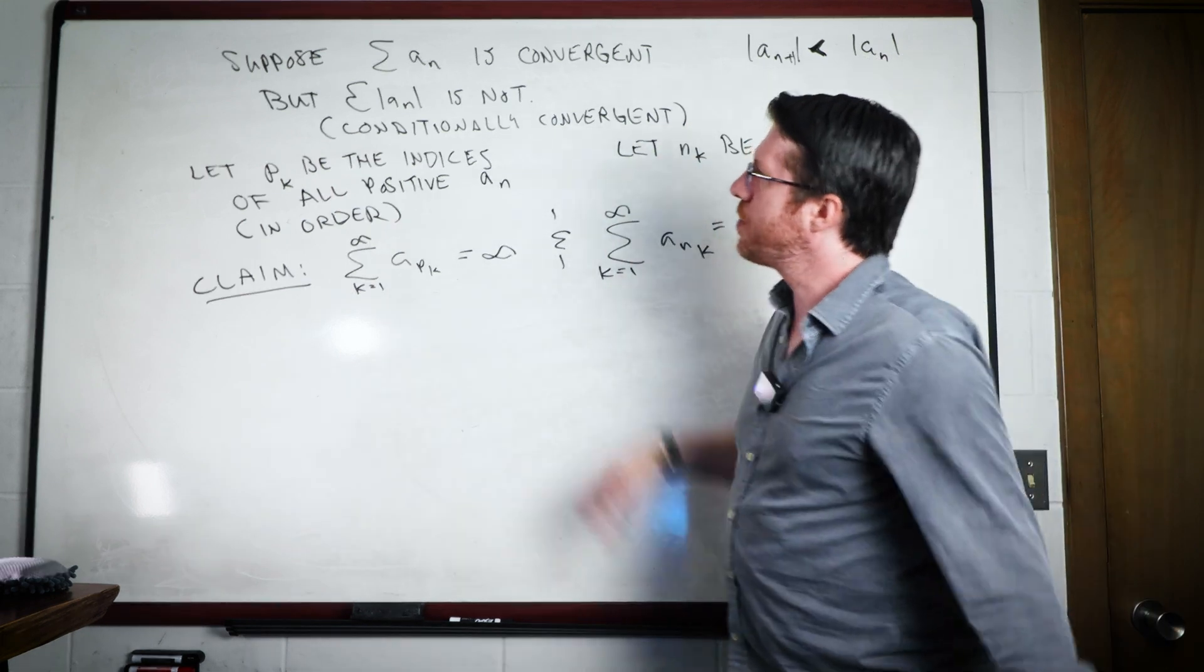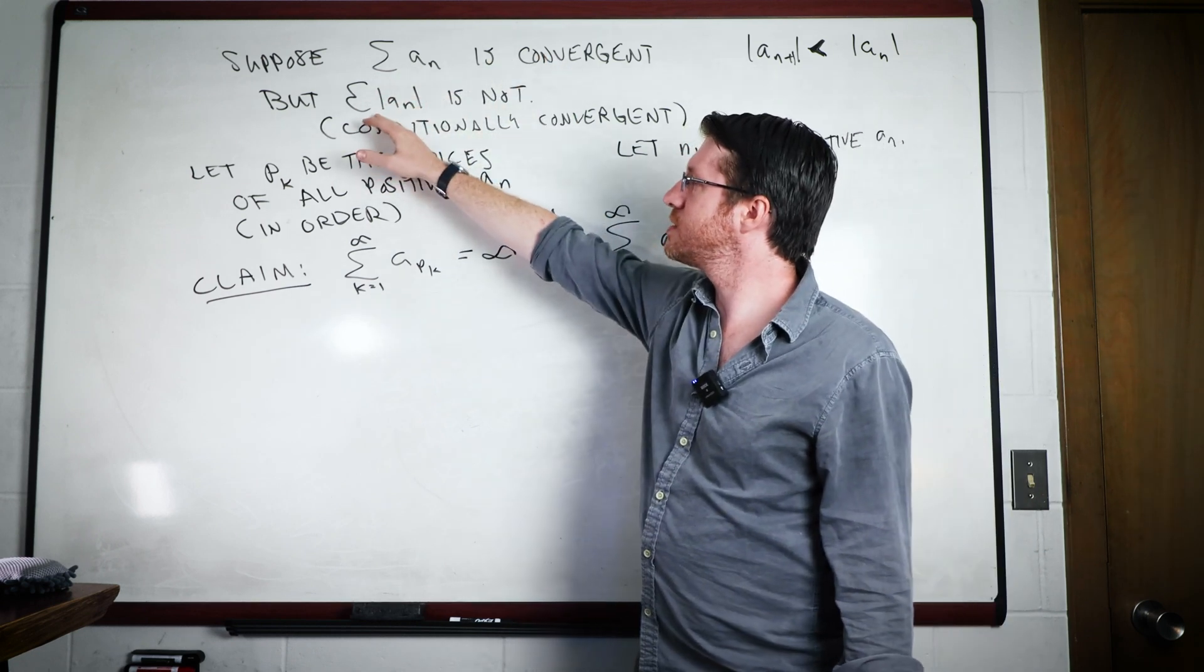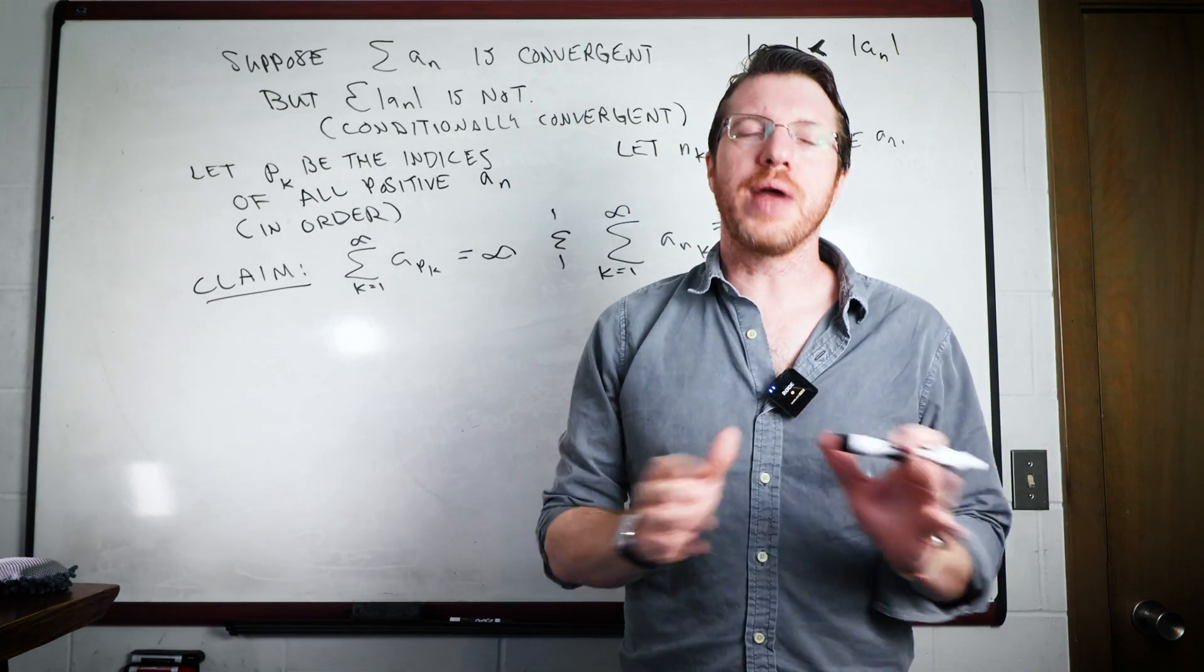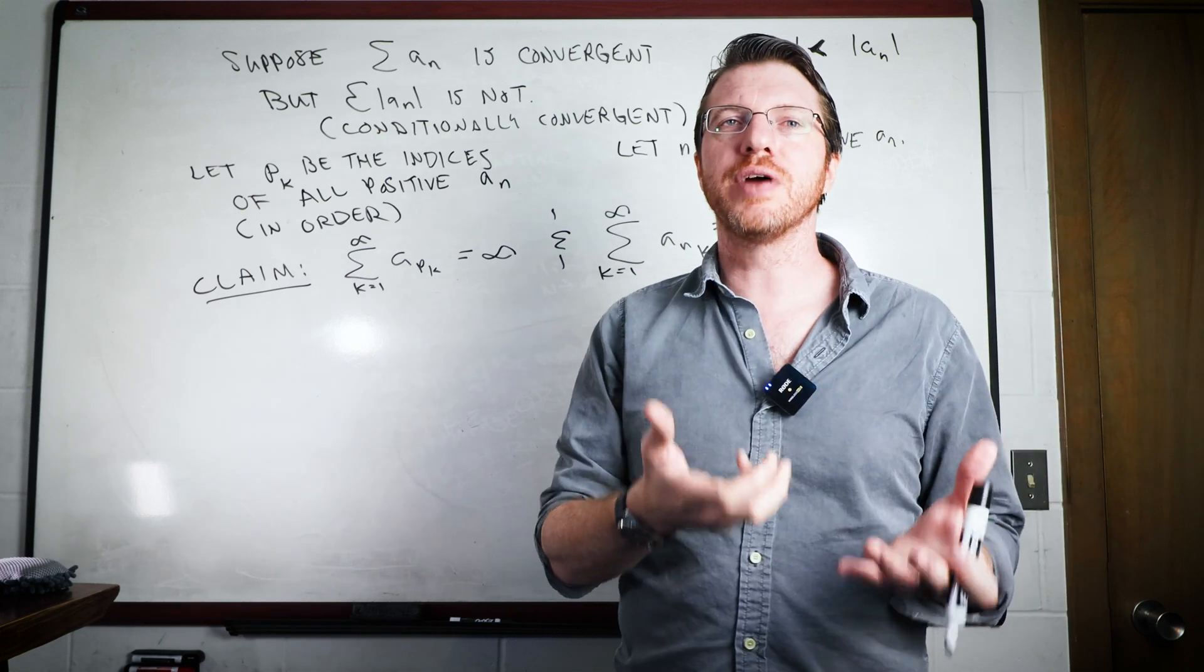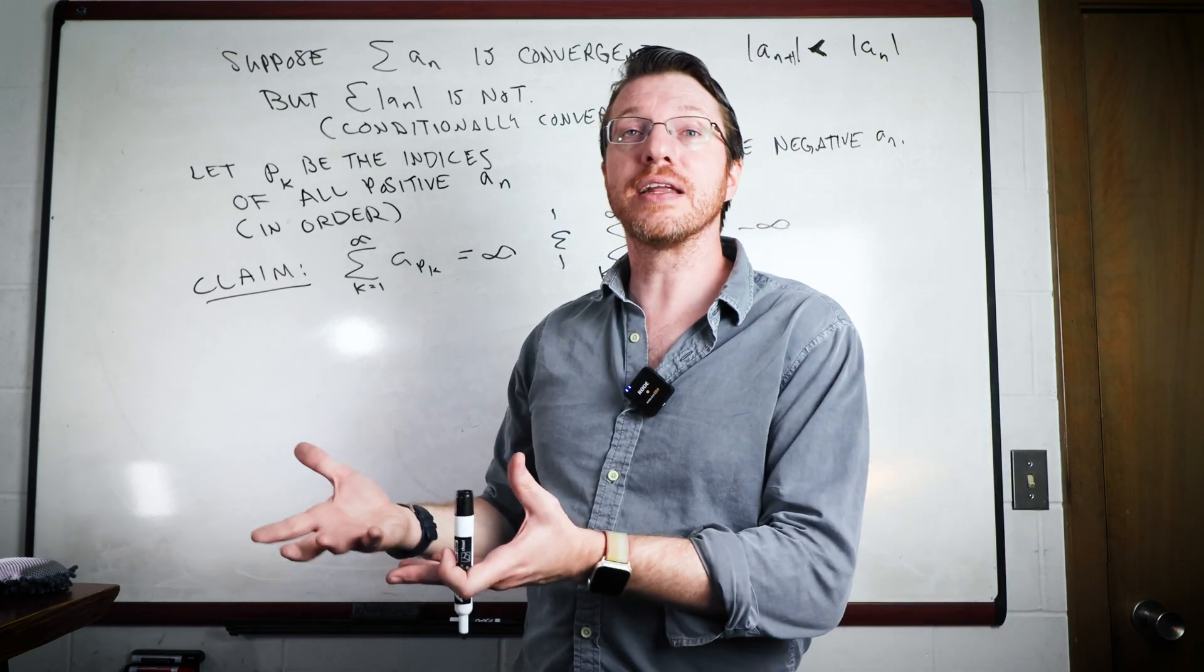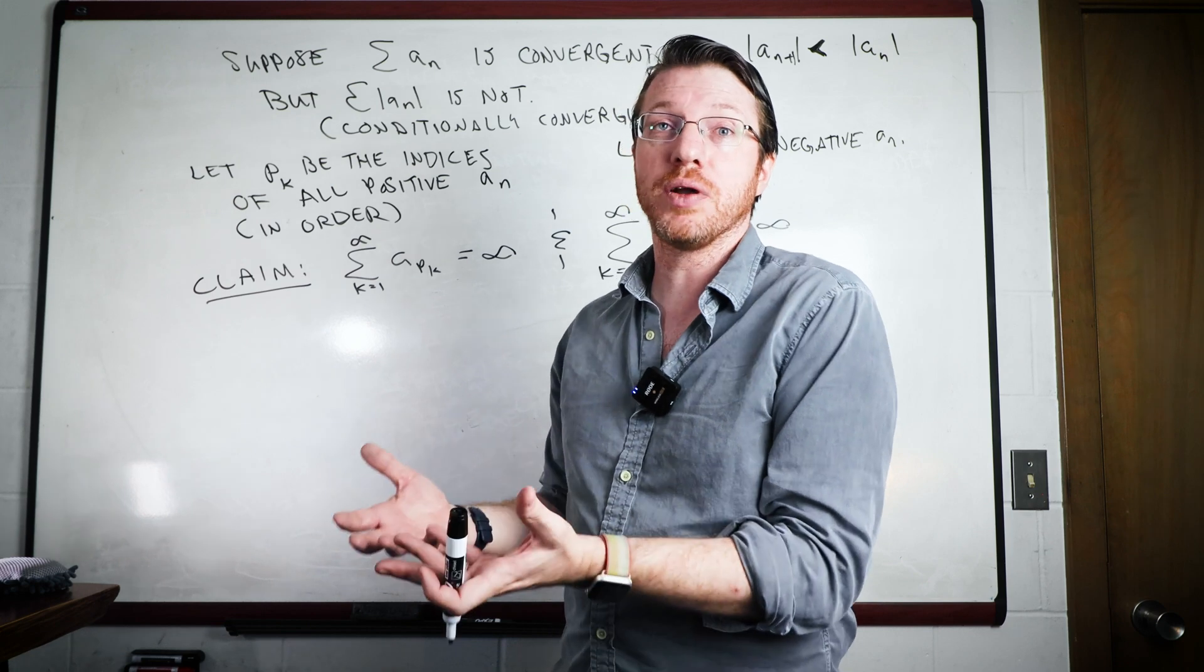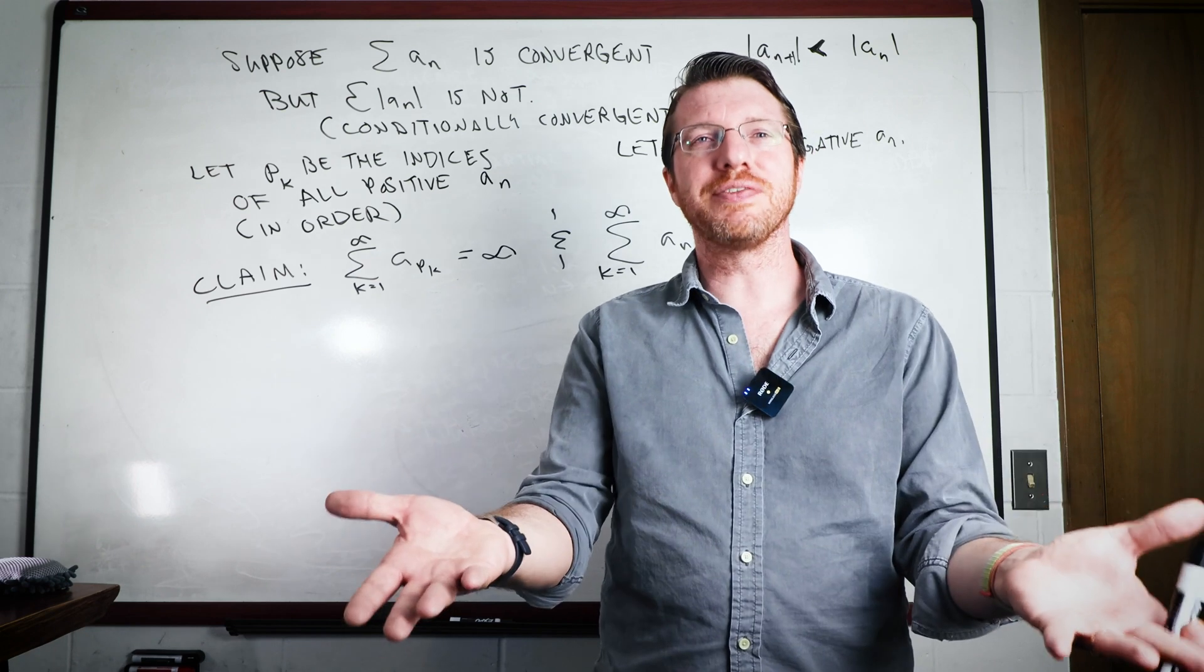So what we're going to do is we're going to talk about this conditionally convergent series. We're going to assume that the series itself is convergent, but that the sum of absolute values is not. And what that is going to end up doing is it gives us these sort of two reservoirs. We have the collection of all our positive numbers. There's going to become this well that we can pull out of that's going to blow up to infinity.